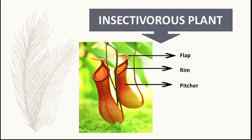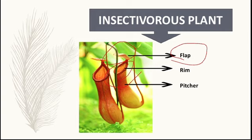Let us see the parts of the pitcher plant. You can see the flap — it is a pot-like structure. The flap produces nectar to attract insects. The rim is the slippery edge of the pitcher where insects slip inside.